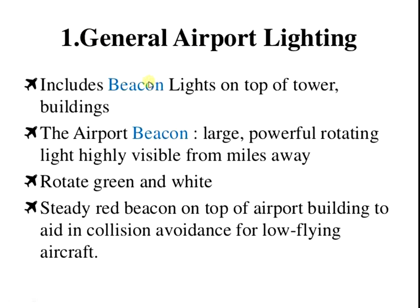The first element is the rotating beacon, or general airport lighting. It includes beacon lights on top of the tower and buildings. The airport beacon is a very large, powerful rotating light, highly visible from miles away. It rotates showing green and white light. A steady red beacon on top of the airport building is added for collision avoidance for low-flying aircraft. The red beacon light is placed to protect aircraft flying near the beacon.